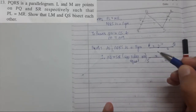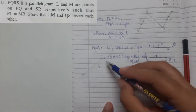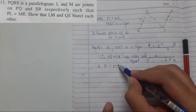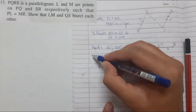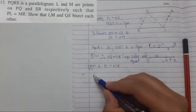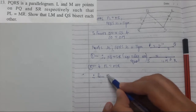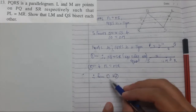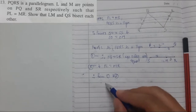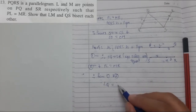Formally: since PQRS is a parallelogram, PQ equals SR — opposite sides are equal (equation 1). We know PL equals MR (equation 2). Therefore, from equations 1 and 2, we can say LQ equals SM.